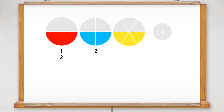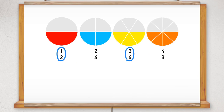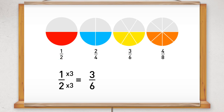Look at the red and yellow circles again and compare the half with the three sixths. If we multiply the one by three, we get three, and also if we multiply the two by three, we get six. Now compare the red circle with the orange circle, or the half with the four eighths. If we multiply the one by four, we get four. If we also multiply the two by four, we get eight.